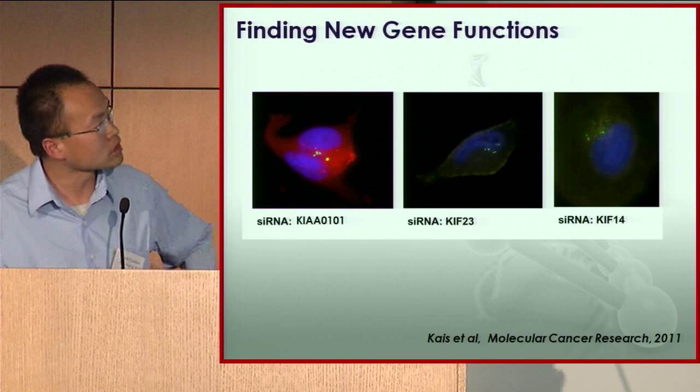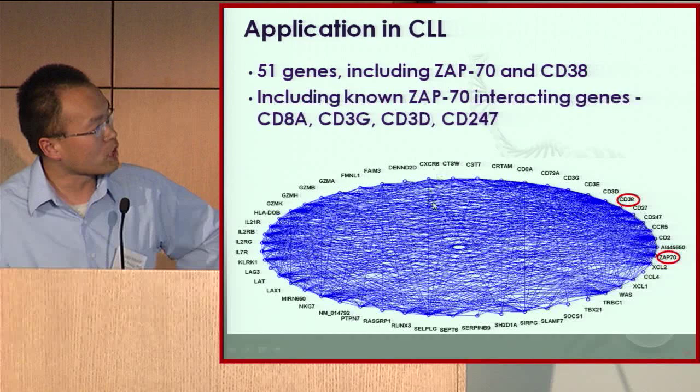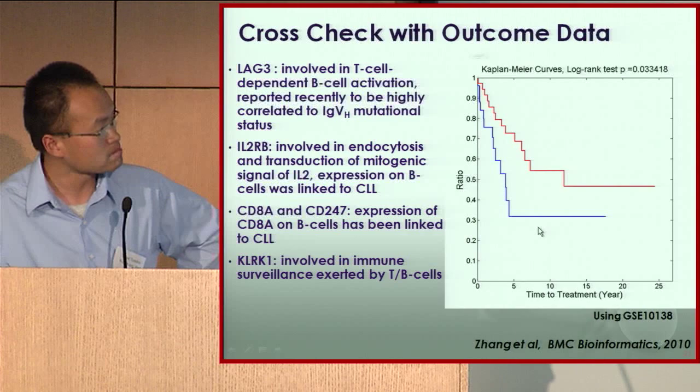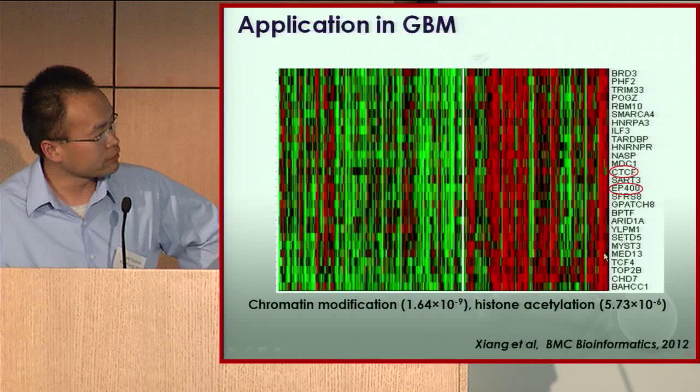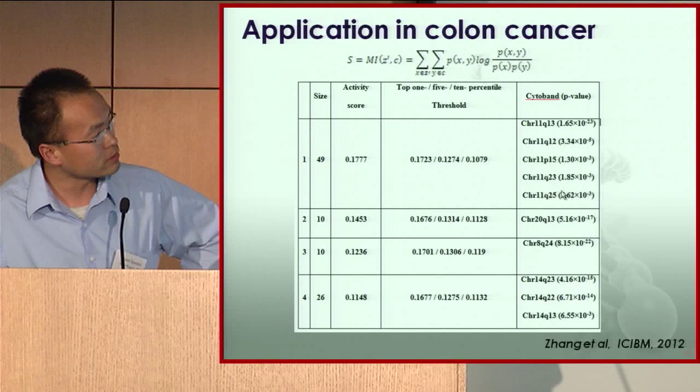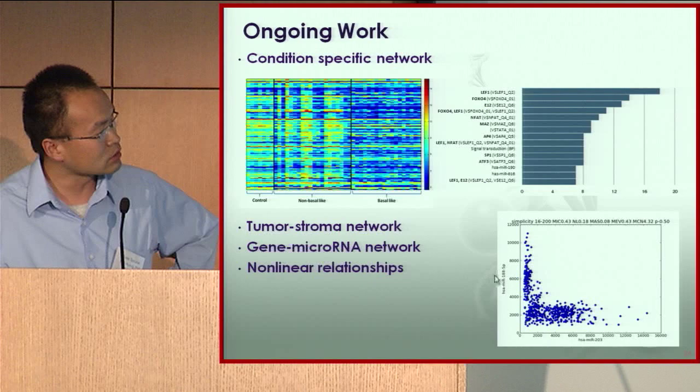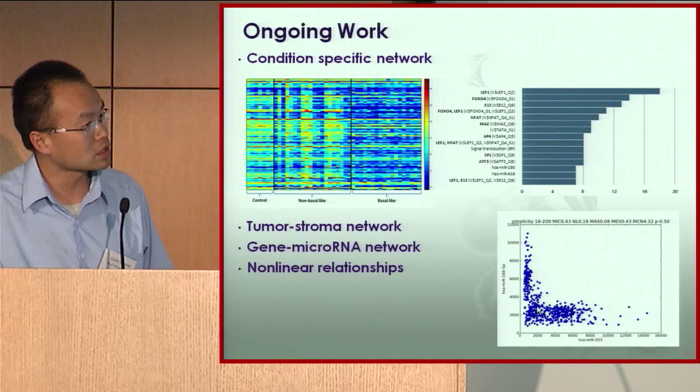Using the same approach, we can apply it to brain tumor studies to identify epigenetic-related networks, and to colon cancer studies to identify potentially hotspots in the genome. There is a lot of ongoing work. Beyond linear relationships, we can also look at non-linear relationships between genes — for example, using a computational approach with Raghu, we can identify microRNAs that over partial samples show a relationship where they cannot be high at the same time, meaning they mutually exclude each other, directly or indirectly. That generates a lot of hypotheses.